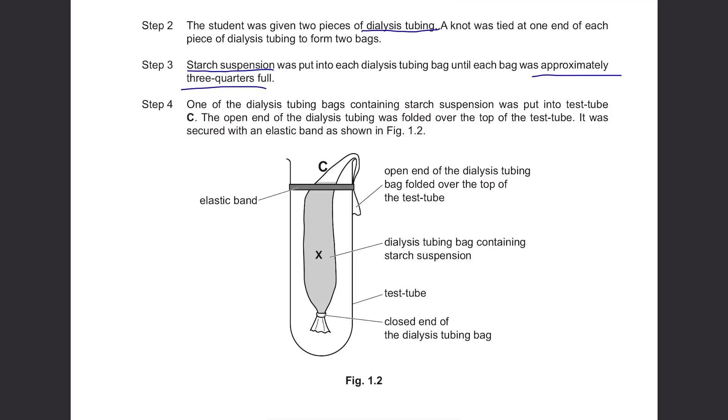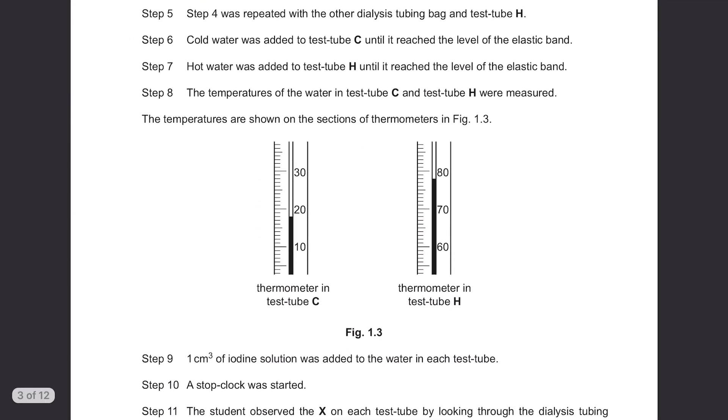Step 3: Starch suspension was put into each dialysis tubing bag until each bag was approximately three quarters full. Step 4: One of the dialysis tubing bags containing starch suspension was put into test tube C. The open end of the dialysis tubing was folded over the top of the test tube. It was secured with an elastic band as shown in Figure 1.2. This is the elastic band that's holding it. The dialysis tubing bag here contains starch suspension. And this end is open, tied to the top of the test tube. This is one of the common biology experiments so I think you guys would have done this before, but because of online learning I guess I can't be so sure of that.